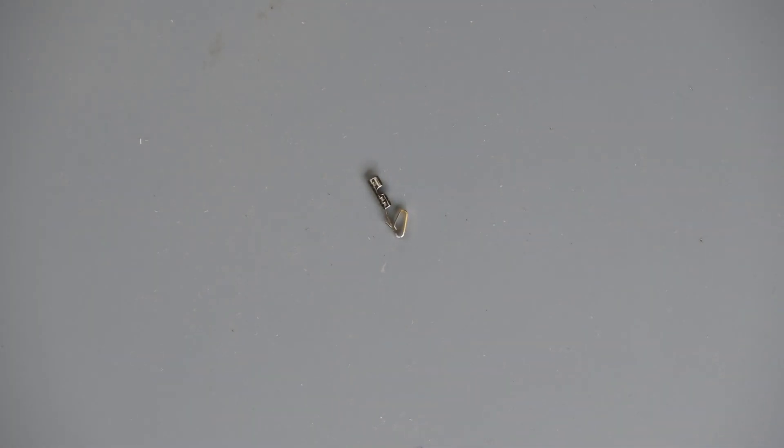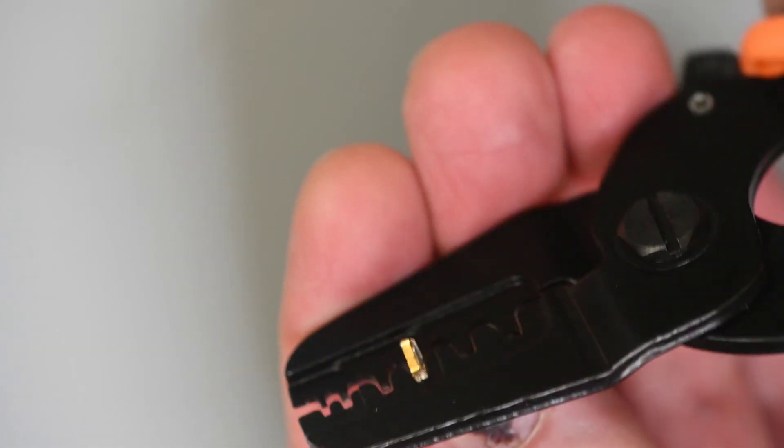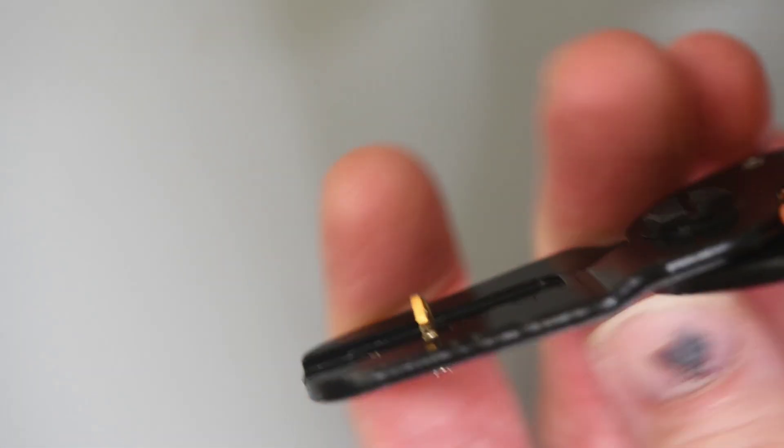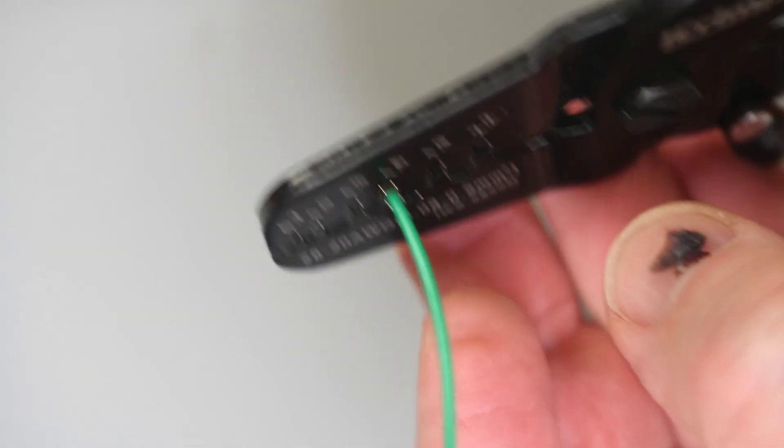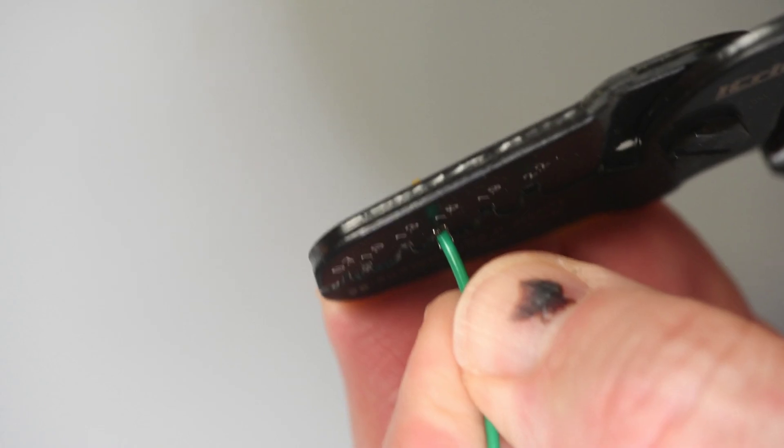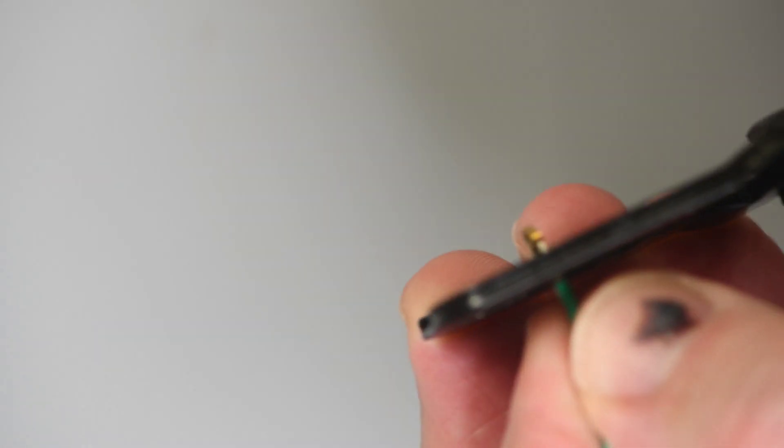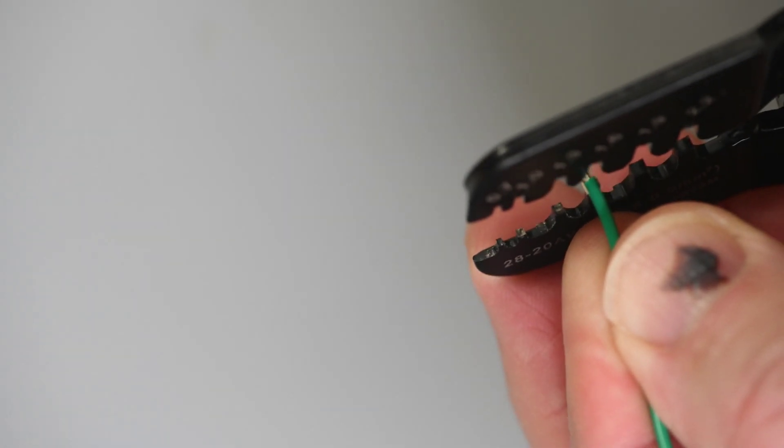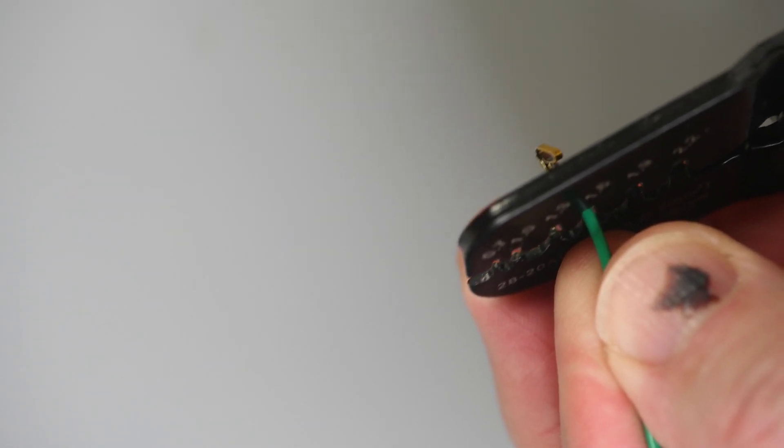These are the Molex KK terminals. They are used in the likes of the PC fan connector. It's a terminal that has been around a while. They are about the largest header terminals I use. They have a very rounded body so it's hard to get a good measure of the width. I've had the best crimps with the 1.6mm slot in the other tools so I'm going to use the 1.6mm here as well.